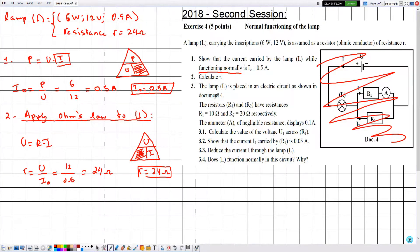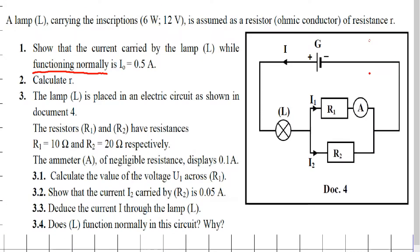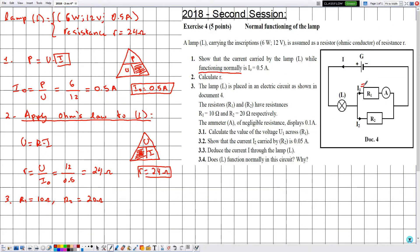Number three: lamp L is placed in an electric circuit as shown in document 4 — now we can use it. Resistors R1 and R2 have resistances R1 = 10 Ω and R2 = 20 Ω respectively. The ammeter A, of negligible resistance, displays 0.1 amperes. Since the ammeter and R1 are in series, I1 = 0.1 A.